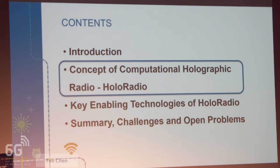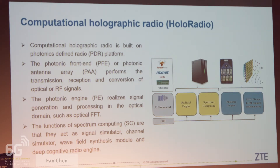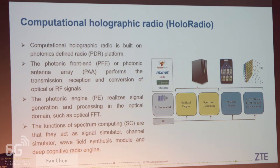Let's move to the second part: concept of computational holography radio. Computational holography radio is built on a photonics-defined radio platform. The photonic front end or photonic antenna array performs the transmission, reception, and conversion of optical or IF signals. The photonic engine realizes signal generation and processing in the optical domain, such as optical FFT. The functional spectrum computing includes a signal simulator, channel simulator, wave field synthesis module, and deep cognitive radio engine. A radio AI engine is introduced to assist in identification. This figure shows the hardware architecture of computational holography radio.